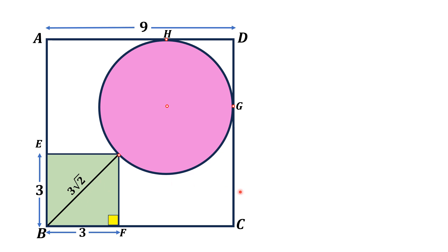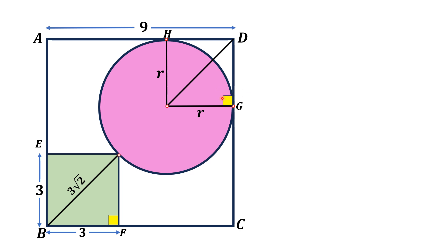So this diagonal length is 3√2. Now we draw the radius of the circle and call it r. Two radii of length r form another square, and drawing its diagonal gives another right triangle with legs of r units, so that diagonal has length r√2.